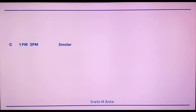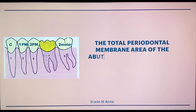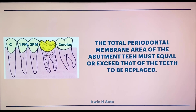Now we will consider Ante's law. Ante's law states that the total periodontal area of the abutment teeth should be equal to or greater than the periodontal area of the teeth we are replacing.